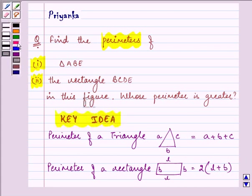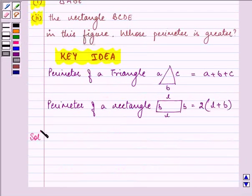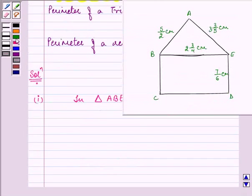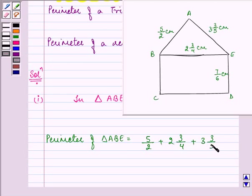Now let's proceed with the solution, keeping the key idea in our mind. Now first of all we need to find out the perimeter of triangle ABE. We have the sides of triangle ABE as 5 by 2, 2 and 3 by 4 and 3 and 3 by 5.